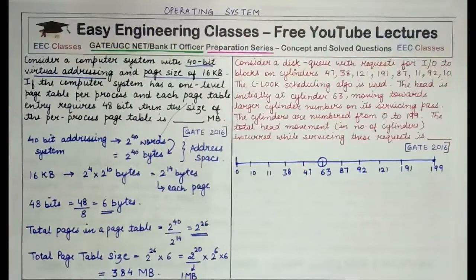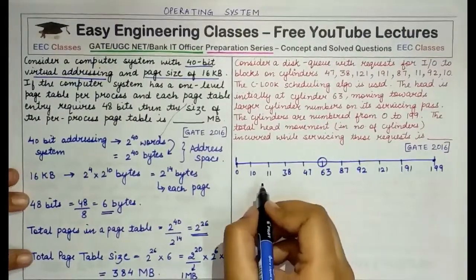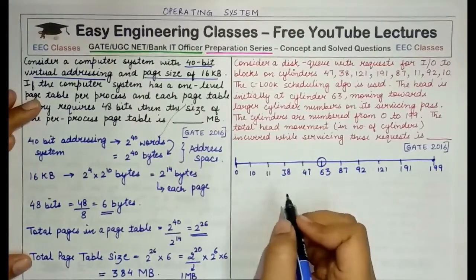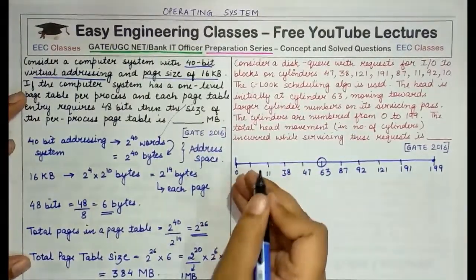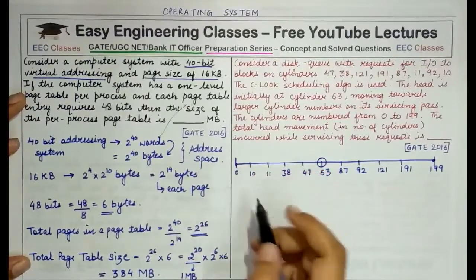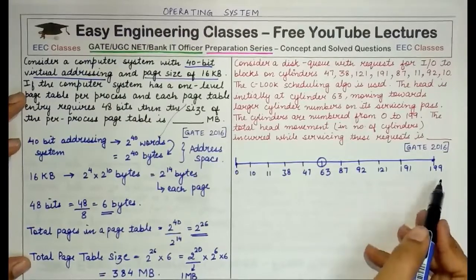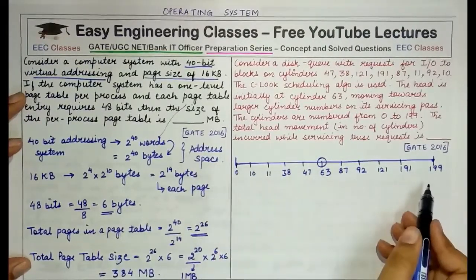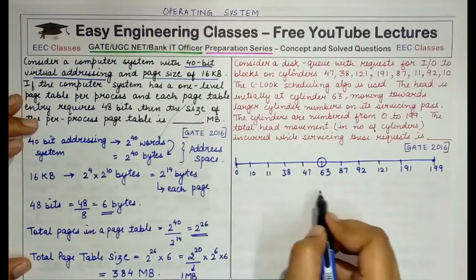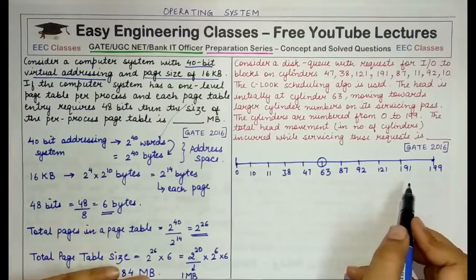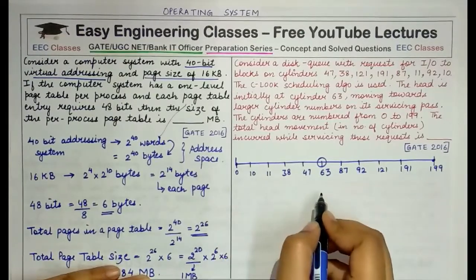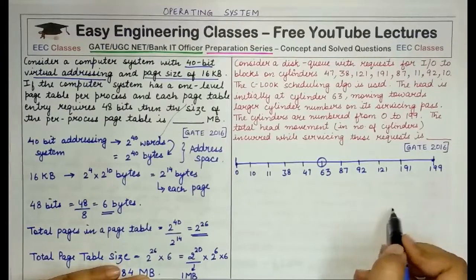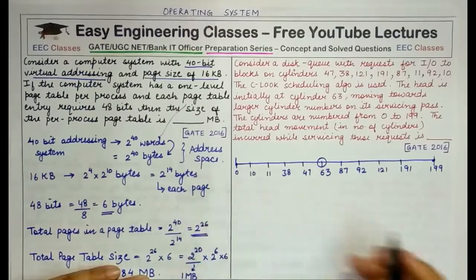In the CLOOK scheduling algorithm, the head moves only in one direction overall. It starts from one end, moves towards the other end, and services all requests in its way — but it never reaches the final boundary. Going from the increasing direction, it starts from the least-numbered pending request and proceeds to the largest-numbered request, stopping there. Then for any remaining lower-numbered requests, it jumps directly back to the smallest request and services them moving in the same direction again.